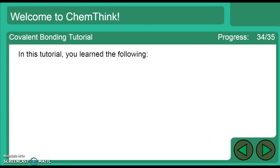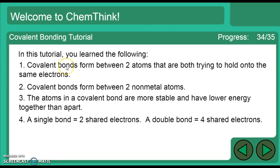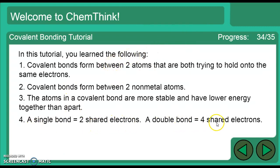To recap: covalent bonds occur between two non-metals sharing electrons. Atoms in a covalent bond are more stable and lower energy together than apart. A single bond is two shared electrons, a double bond is four shared electrons, and a triple bond is six shared electrons.